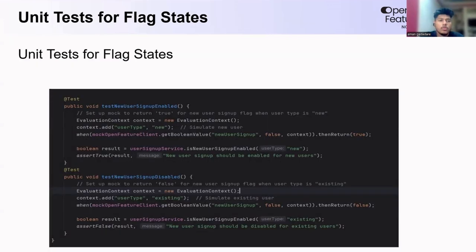Here is an example of JUnit testing for new user signup enabled. If your application has signup functionality and there is a new user, the signup will be enabled for new users. Here I have used the Evaluation Context API provided by Open Features, which is used for various kinds of users. If the user is new, the signup will be enabled. But if the user is an existing user, the signup will be disabled. We can test this perfectly with feature flags.